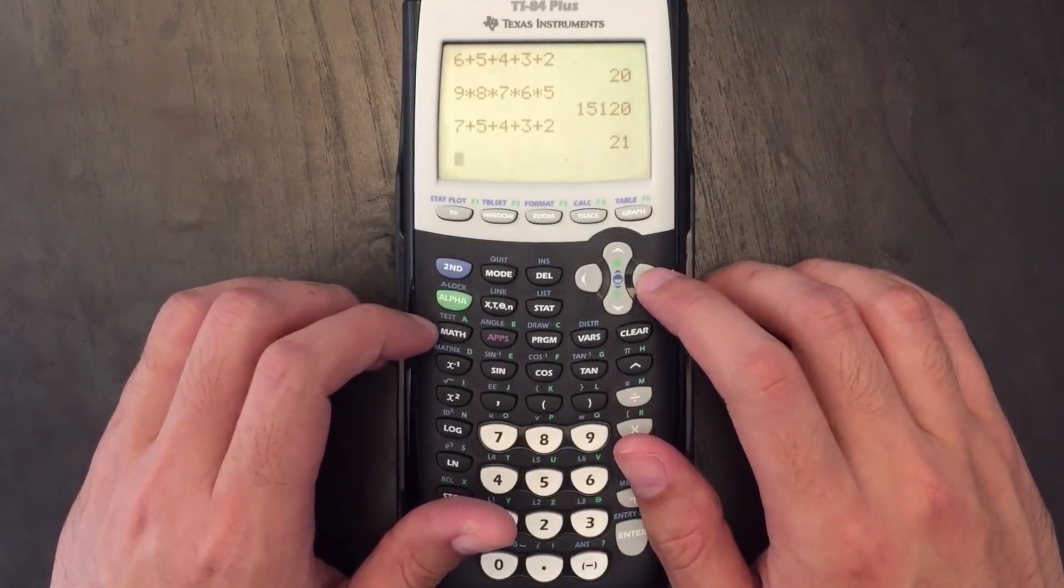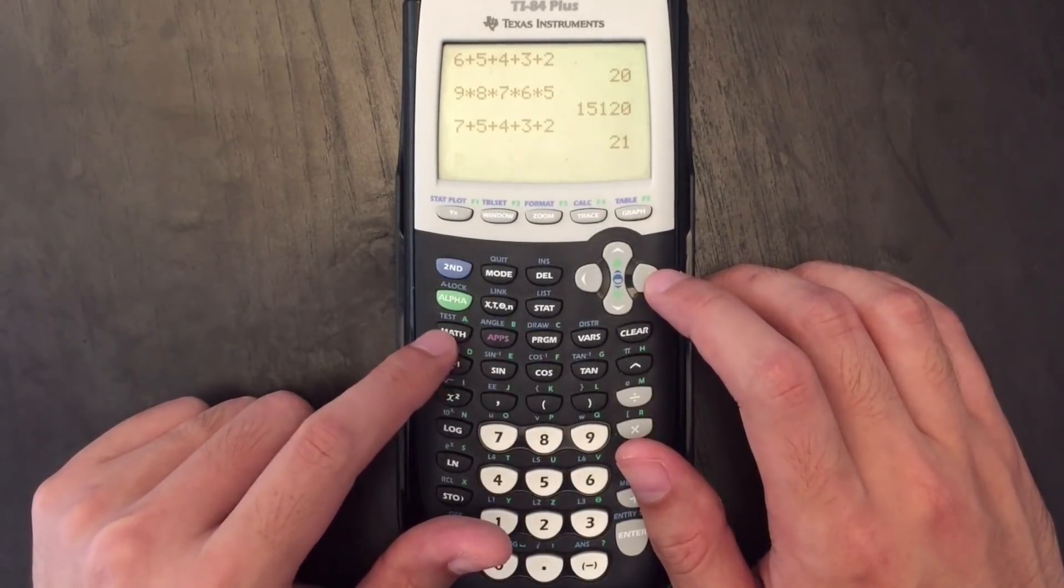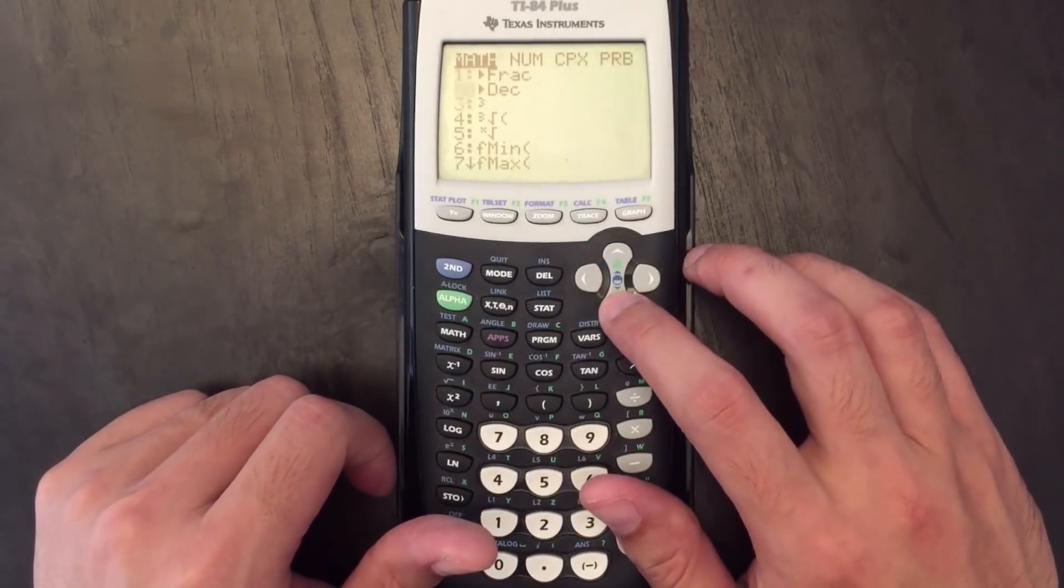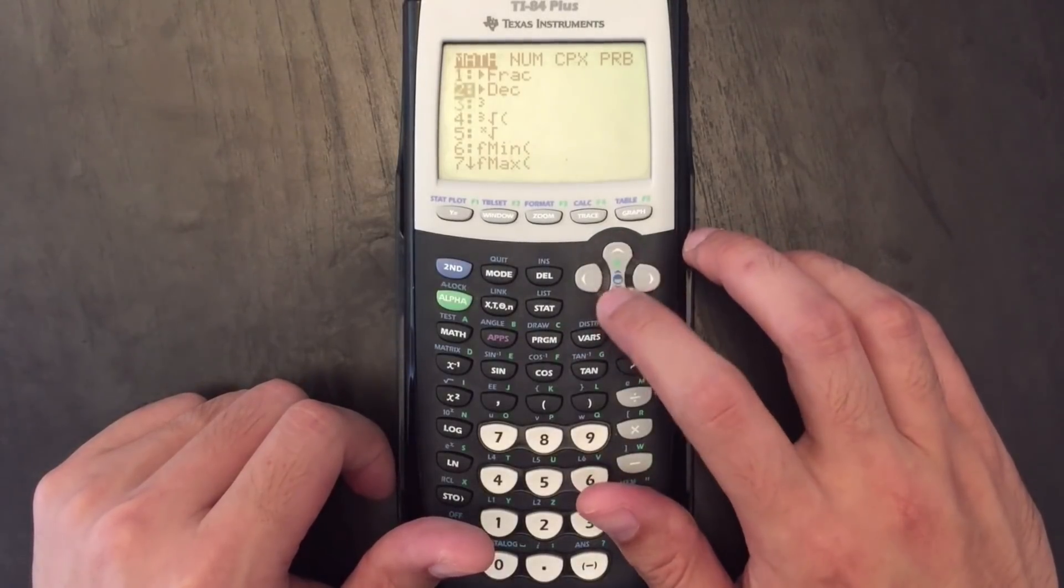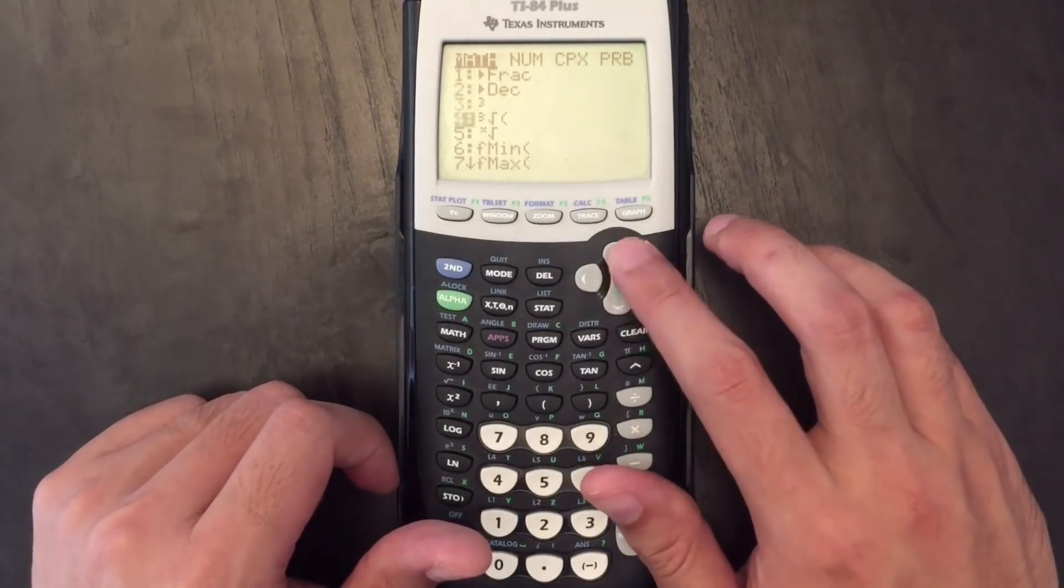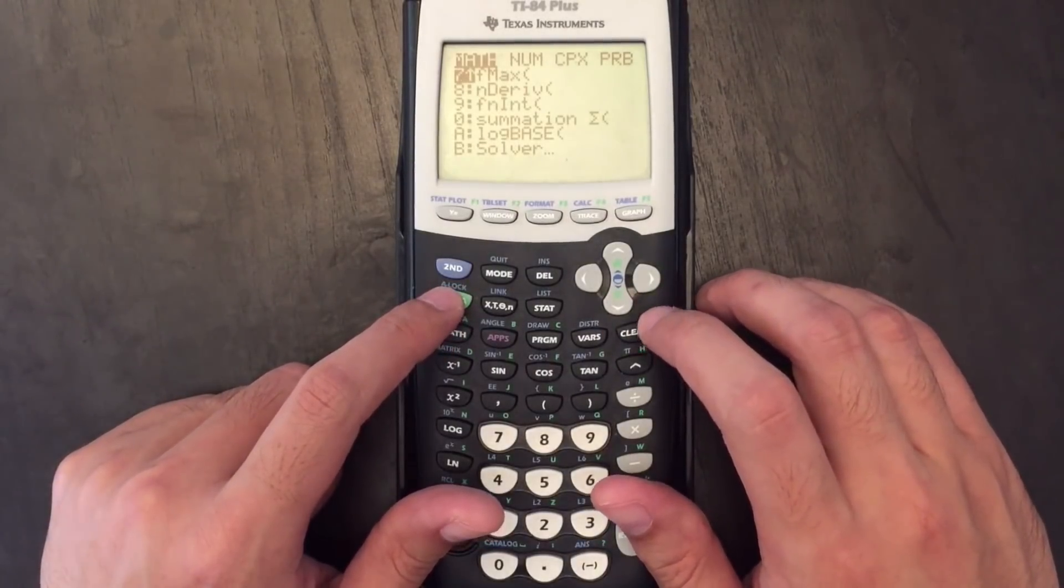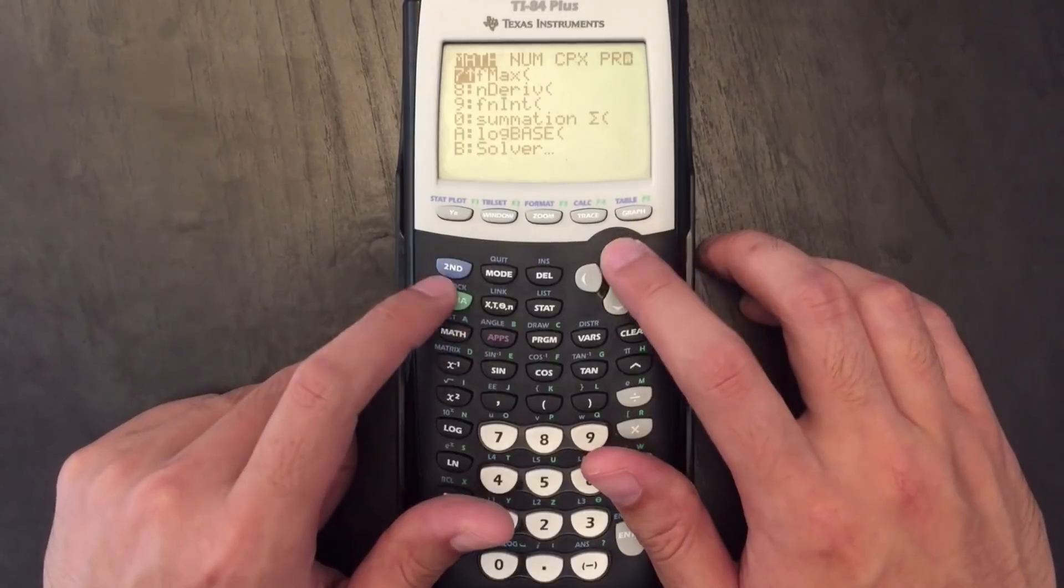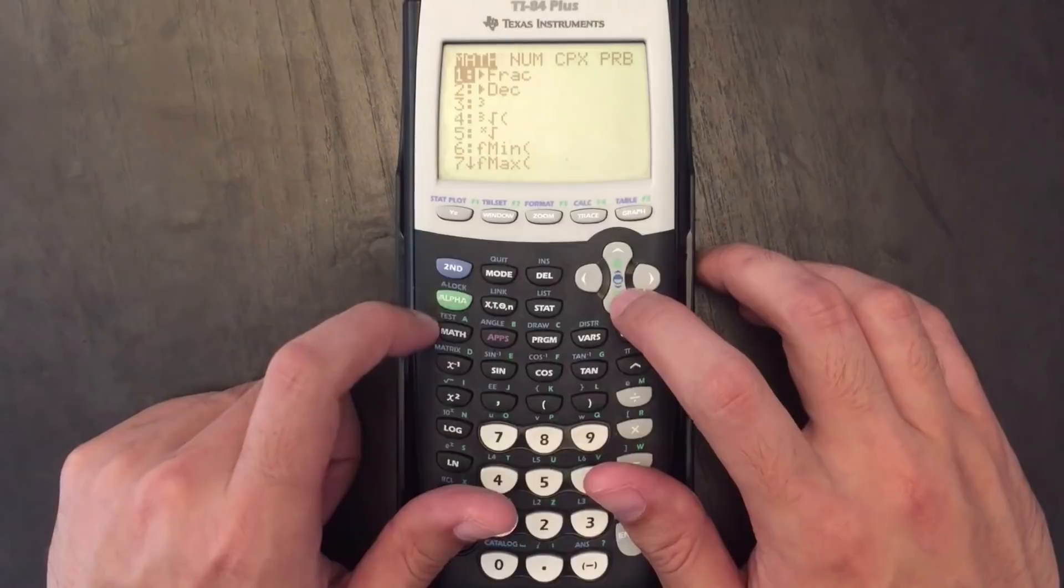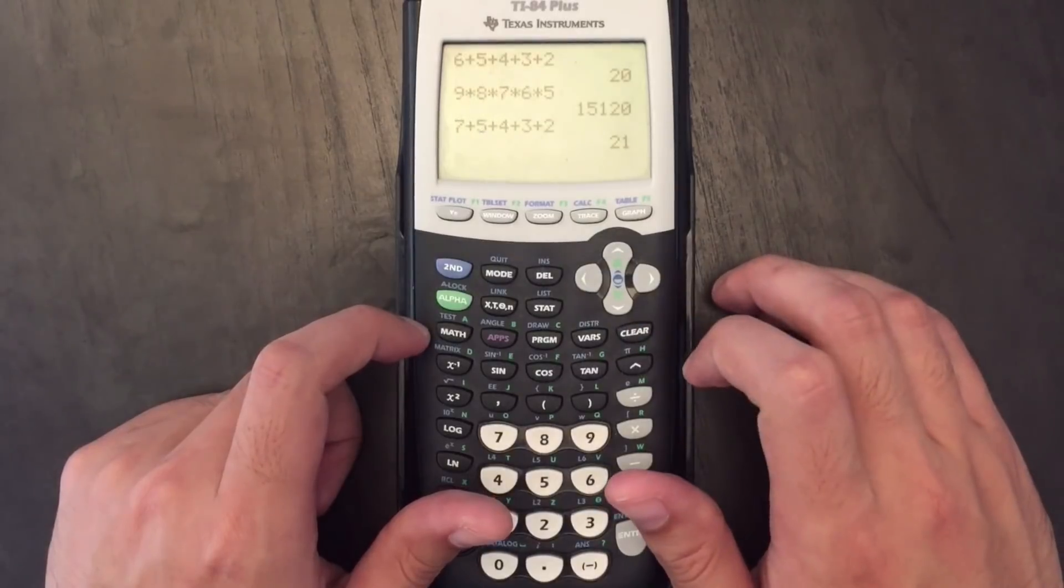So the next thing that I want to point out is this math menu which you can access by pressing this math button here on the left and this brings up a variety of menus and you can see that there's a lot of functions within each of them. Now if I know what I'm looking for and I don't always want to have to press this down arrow to get there what I can do instead is press alpha down to zoom to the next page and similarly I can press alpha up to go back to the previous page. So to quit from this math menu I press second quit or if I'm in the math menu I can just press clear to get out of it.